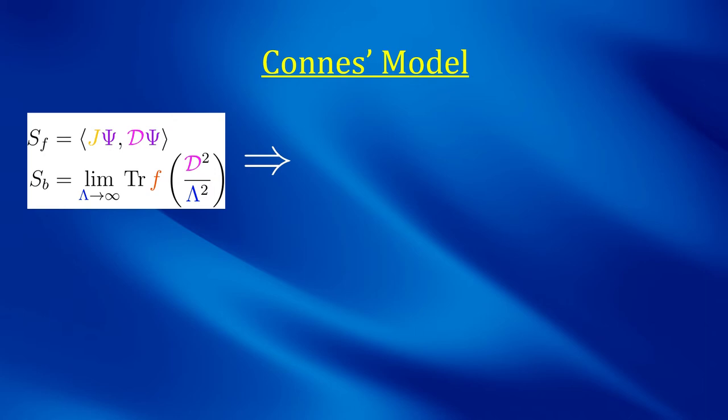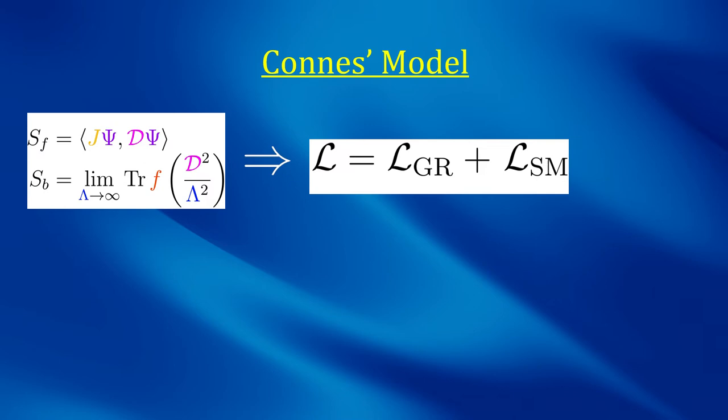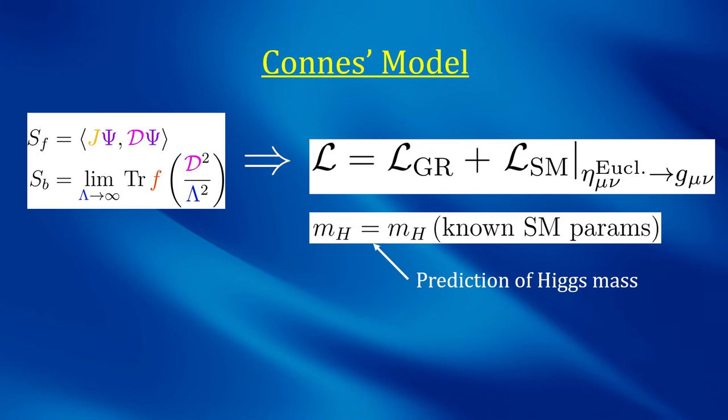Now, Alain Connes, one of the fathers of non-commutative geometry, applied all this machinery to the gauge algebra of the standard model. And as a result, he found the action of the standard model minimally coupled to general relativity, which means that the Lagrangian of the theory is the sum of the Lagrangians of general relativity and of the standard model, in which the metric is not the flat space metric, but the metric tensor g mu nu of GR. Moreover, as an additional bonus, the Higgs mass is completely determined from the other parameters. At the time, the Higgs mass hadn't been discovered yet, so this theory was really a prediction for the Higgs mass.